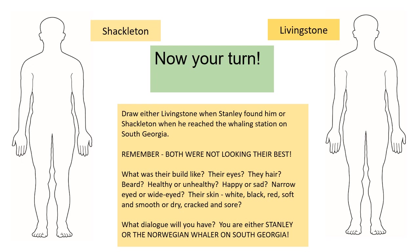It could just be something like, 'Oh my gosh, I can't believe you're here,' — he asked, and you replied. Remember, I want some dialogue, so you will be using speech marks, but you will mainly be describing their appearance. What did they look like? Imagine you were that whaler, or imagine you were Stanley, seeing Shackleton or Livingston for the first time in the flesh. The first thing you need to do is draw them with detail — drawing is part of your plan. A good detailed drawing will give you ideas about what you can write. Then describe their appearance, have some dialogue, make it creative, and I think you will have a brilliant piece of narrative writing to finish off this unit.